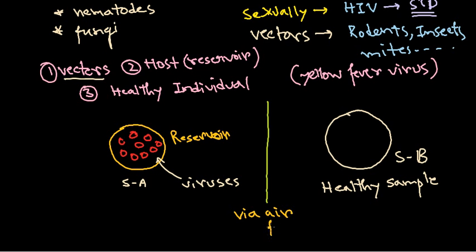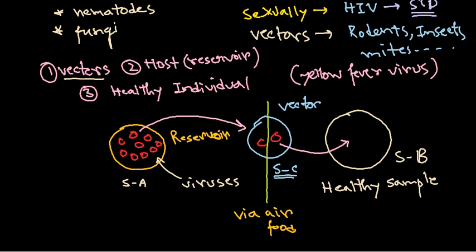It can be crossed via air. We have already talked via food or via some other individual. If it is crossed by some other individual, then we probably call it as a vector. So here I draw a third thing which will be called as vector, sample C. Now this vector is playing the role of transferring this virus particle from this reservoir or the host to the healthy individual.